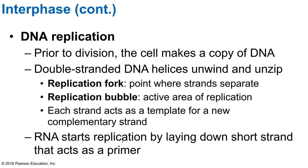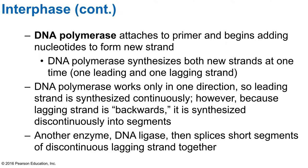RNA primase starts the replication by laying down an RNA primer. After the DNA is unzipped and unwound, RNA primase comes in and lays down this primer, setting the stage for DNA polymerase. DNA polymerase attaches to the primer and starts adding nucleotides to form the new strands. The polymerase doesn't know where to start until it finds those primers. Those primers are RNA. DNA polymerase synthesizes both new strands at one time, making a leading and a lagging strand.